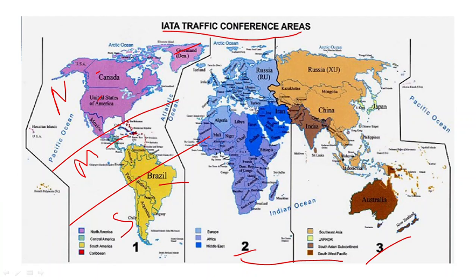Coming to TC2 - the line of the Ural Mountains in Russia and Tehran in Iran divides TC3 from TC2. You can see this line dividing both regions. In TC2 we have the whole of Europe, Africa, different islands in the Indian Ocean, and Middle East countries west of Iran - all Middle East countries are also in TC2.